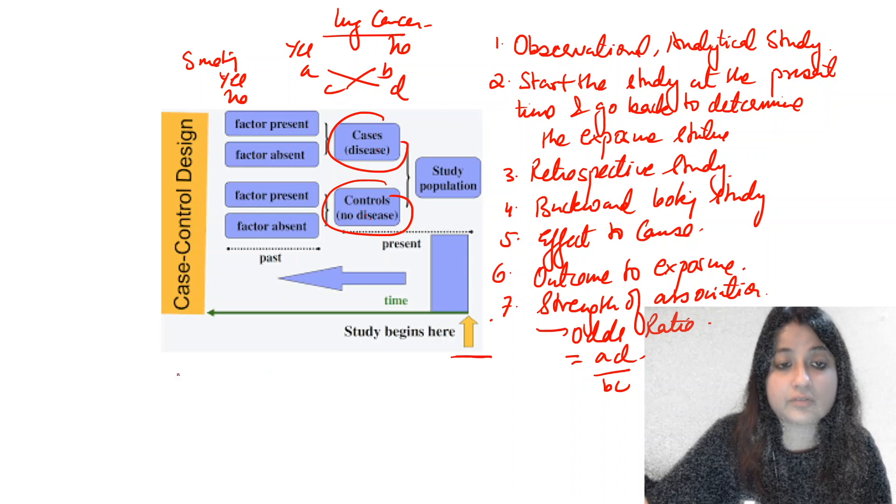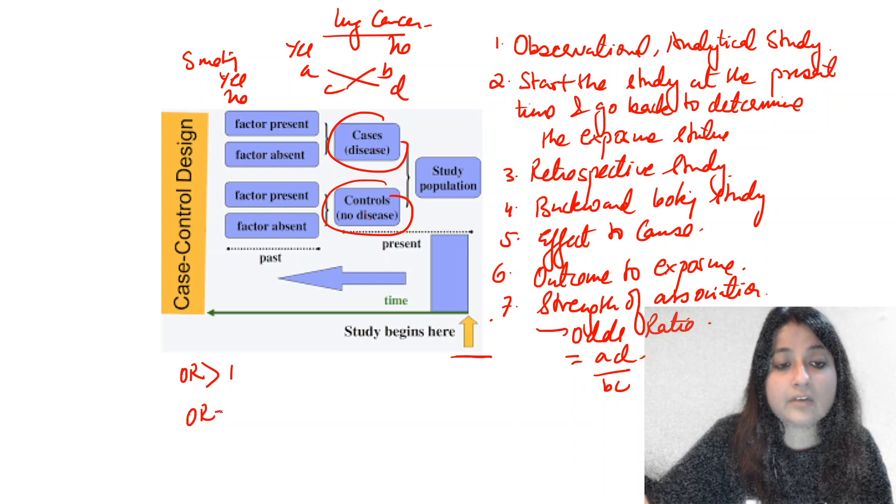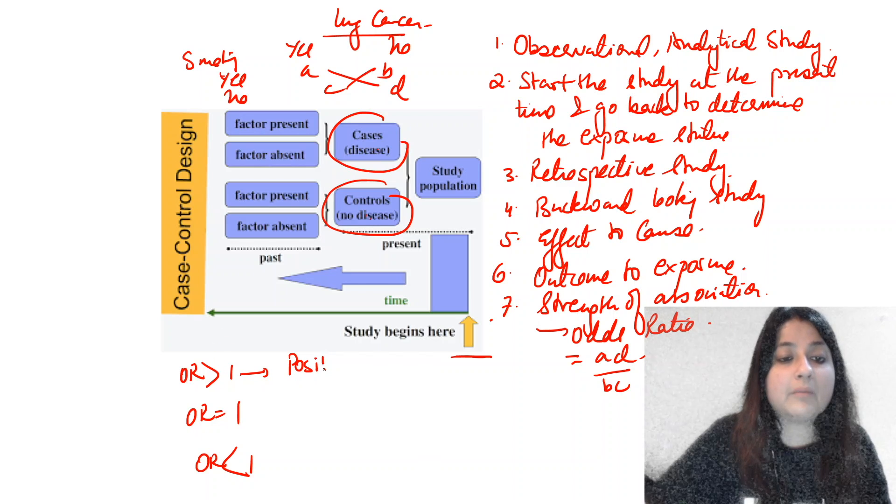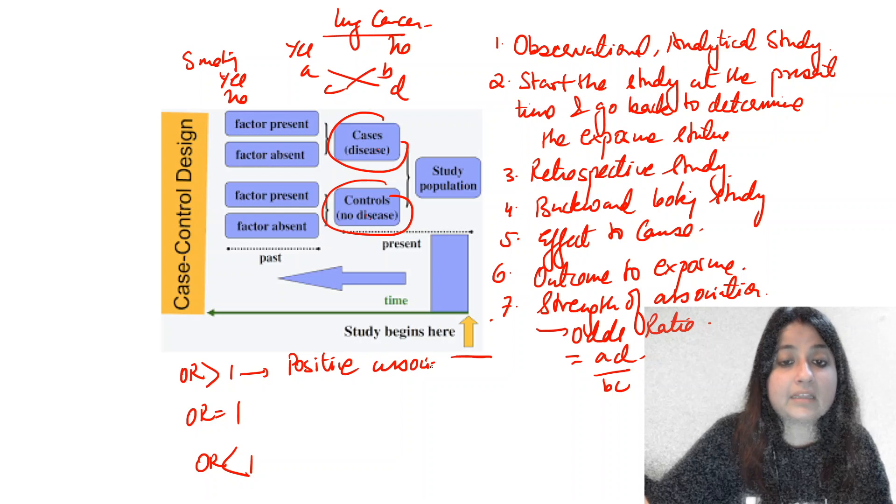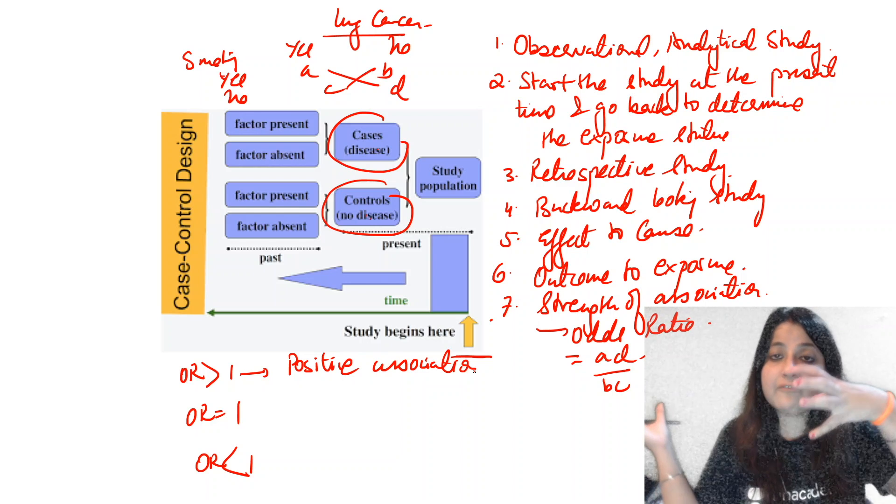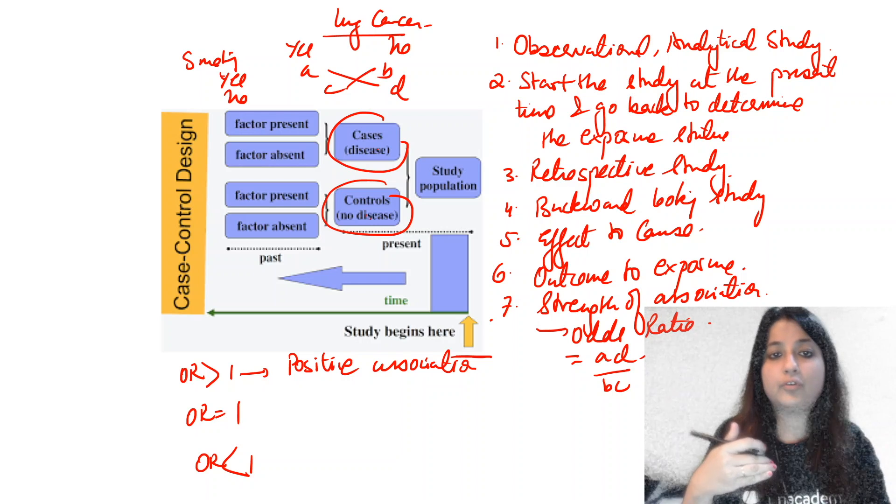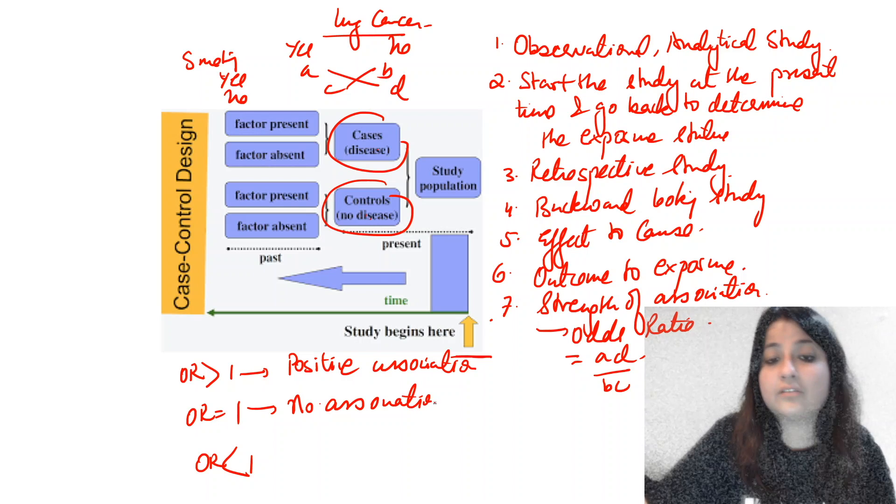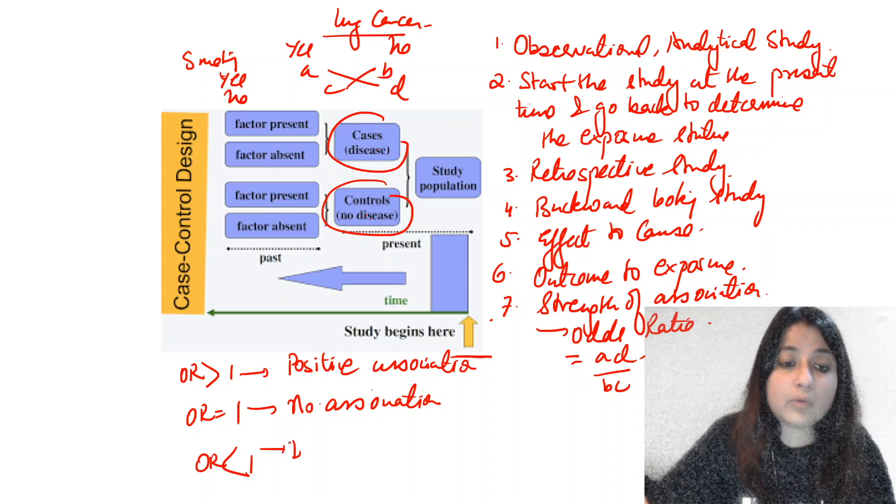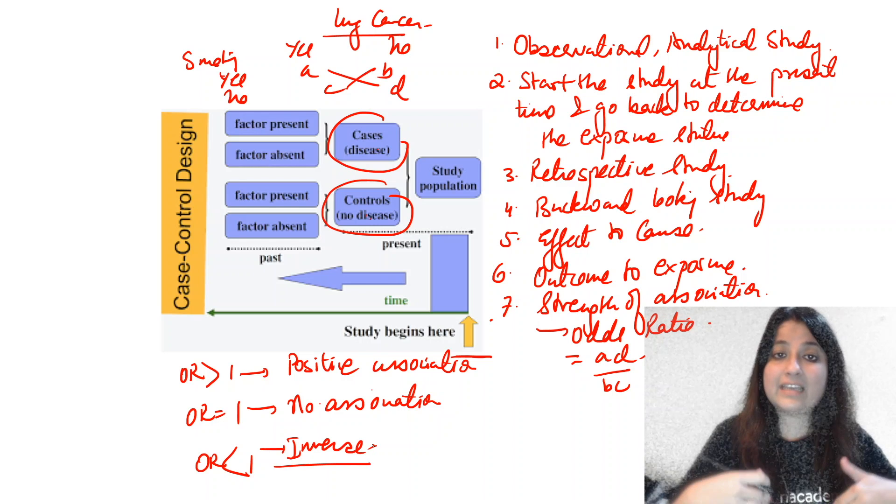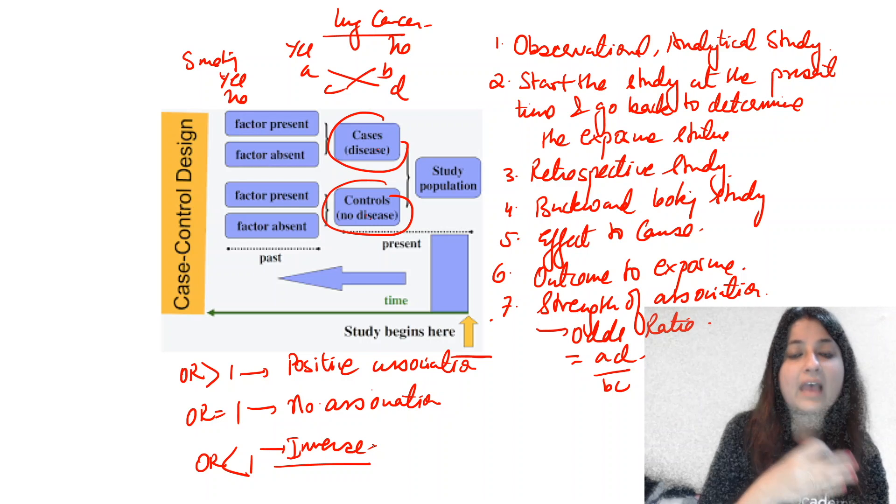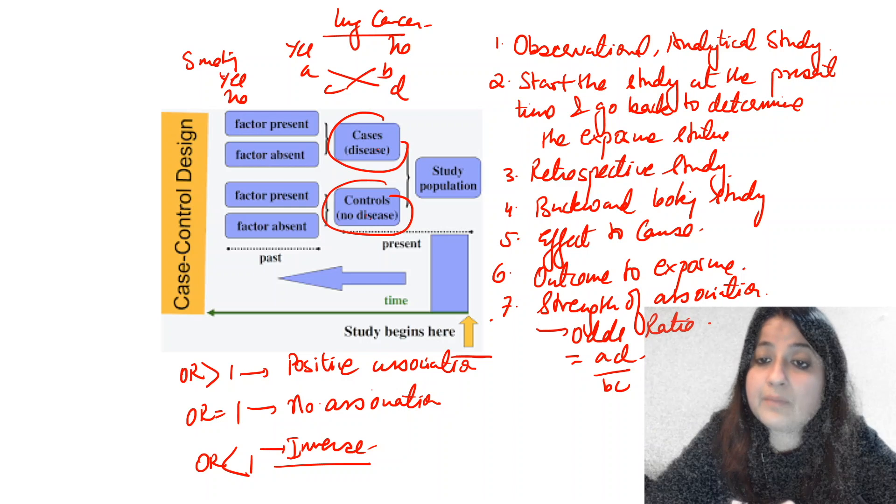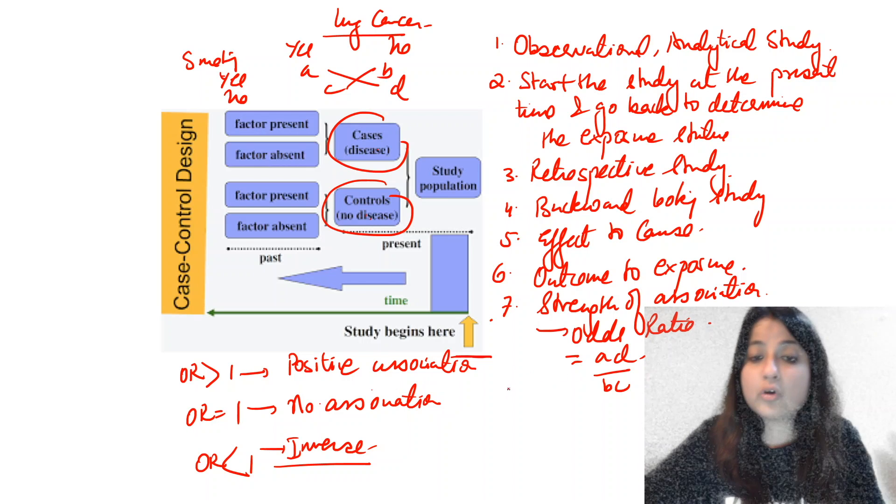Odds ratio could be more than one, could be equal to one, could be less than one. All these questions come in exams. Odds ratio more than one means positive association, meaning lung cancer cases have greater odds of being exposed to a particular risk factor. One means no association, whether you smoke or not it has no association with lung cancer. Inverse means lung cancer cases have less chance of giving history of exposure to that particular risk factor.